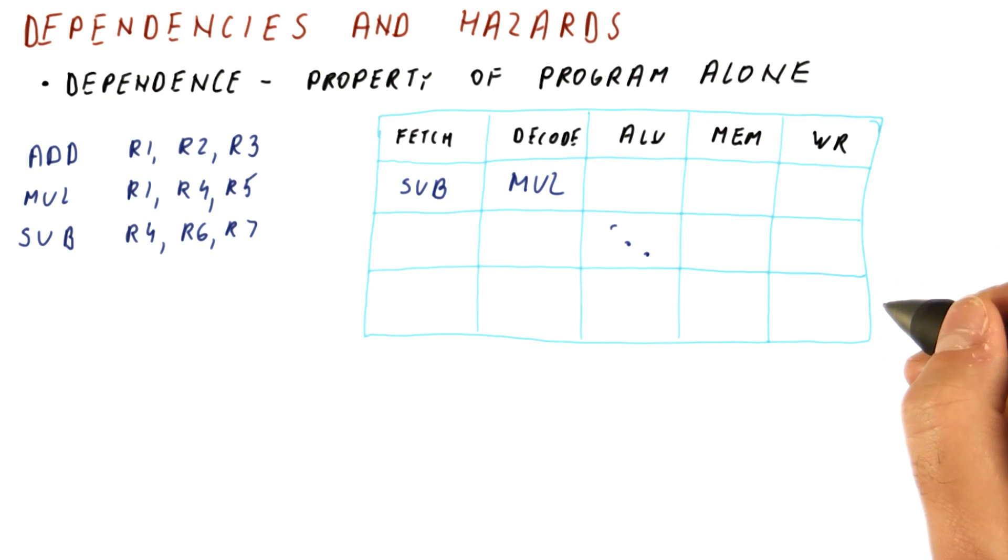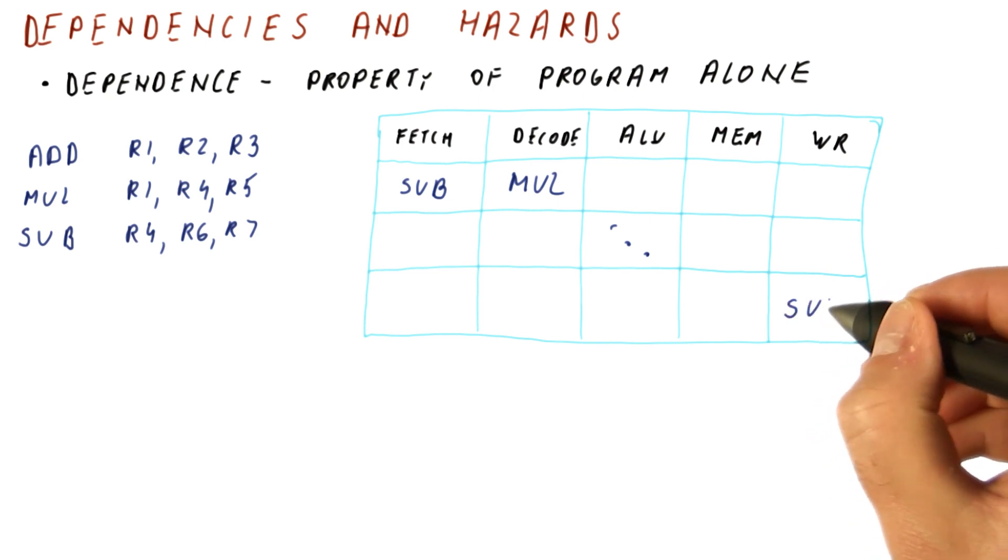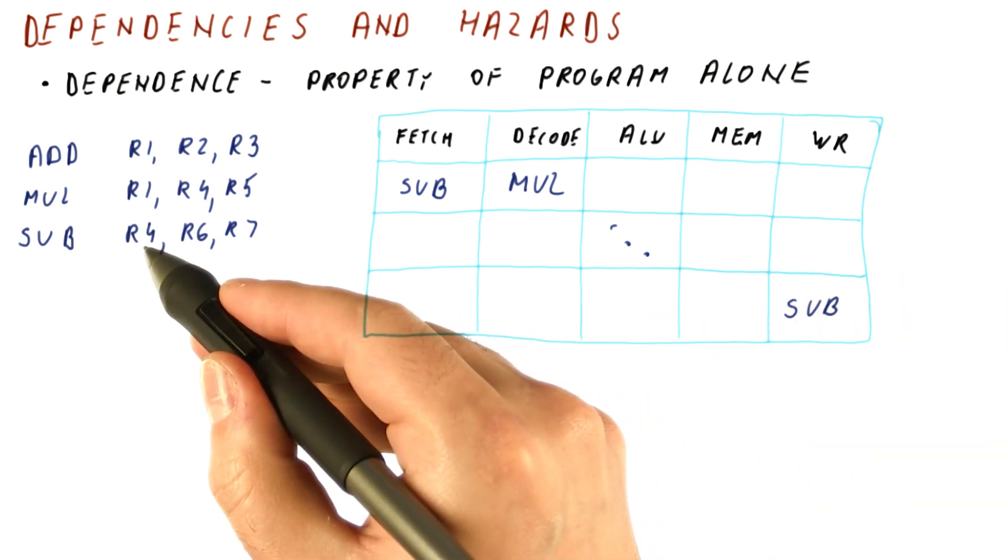So the multiply reads the value of R4 that was not affected by the subtract. Later on, when the multiply is done, the subtract will finally write to R4.